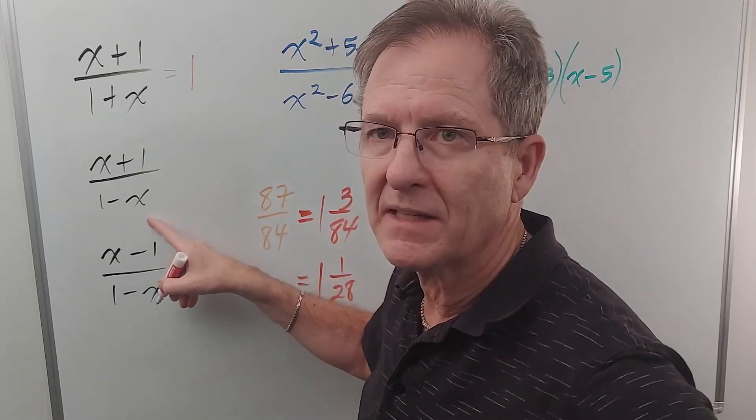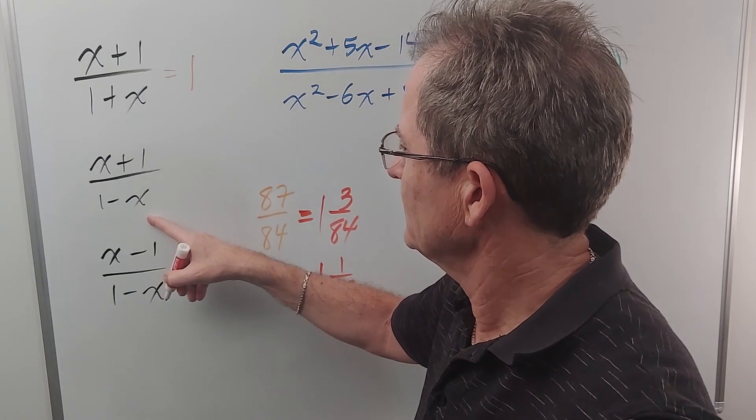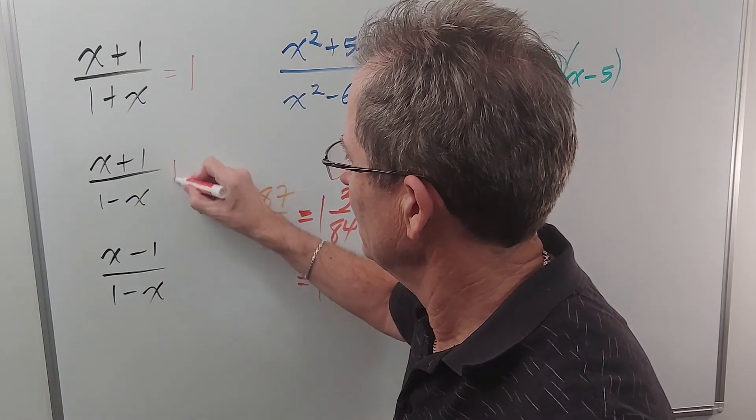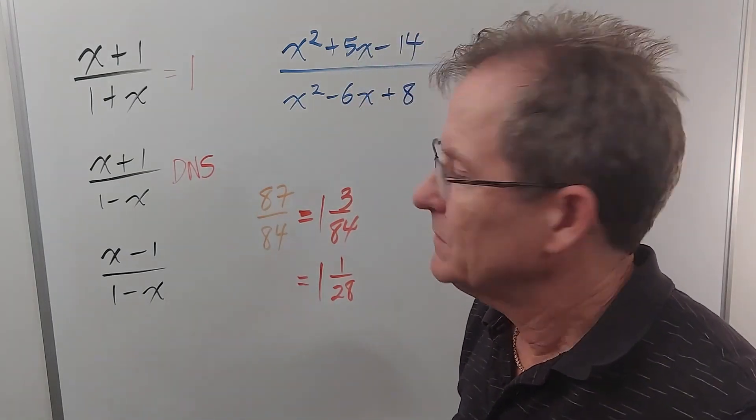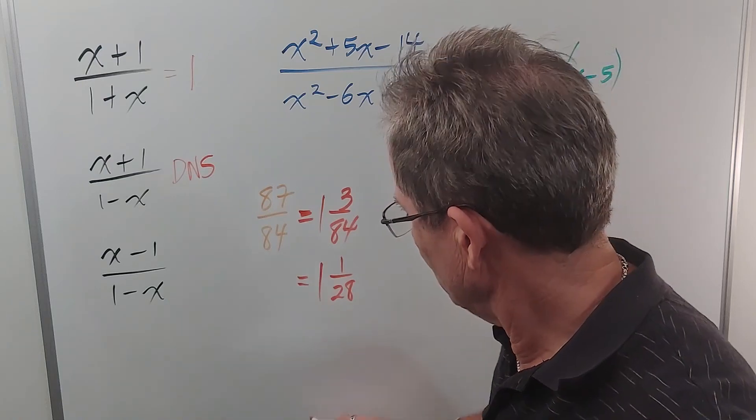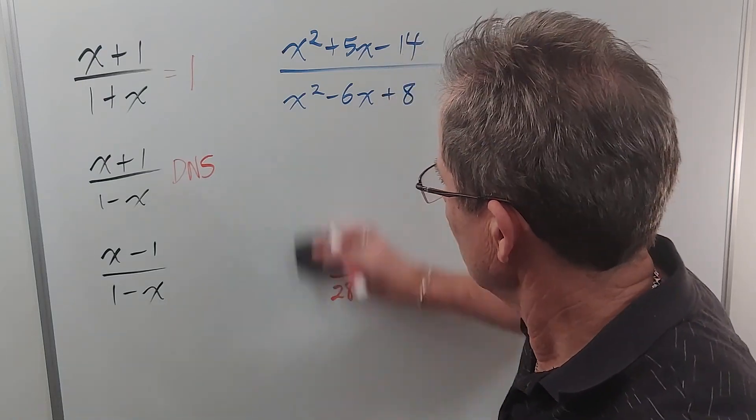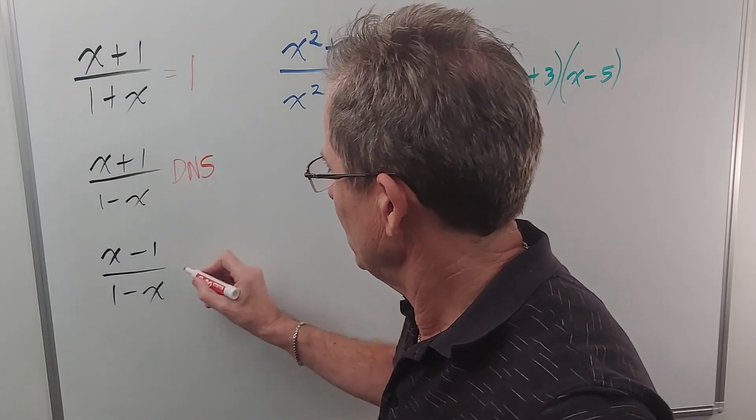What about this one? x plus one over one minus x. Can we manipulate that so we can simplify it? Well, it turns out we can't. This one does not simplify. Be aware of that. Here x can't be positive one. Now what about this one? x minus one over one minus x might look like it's similar to this one, but...